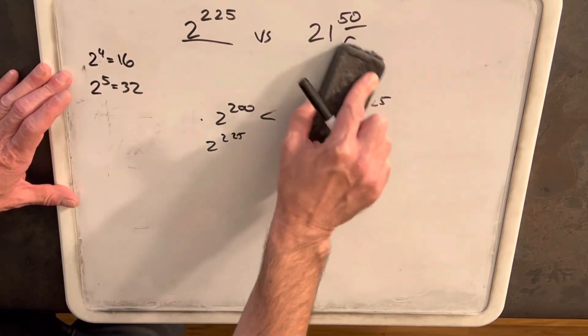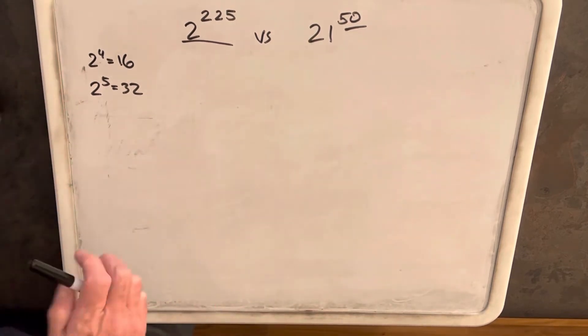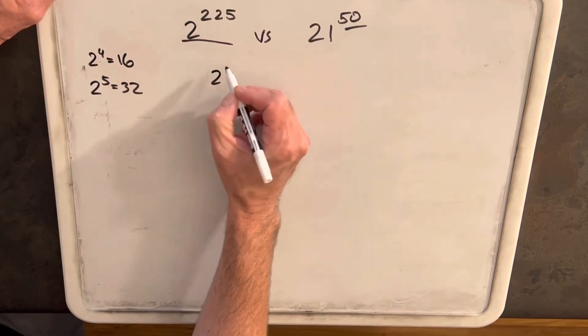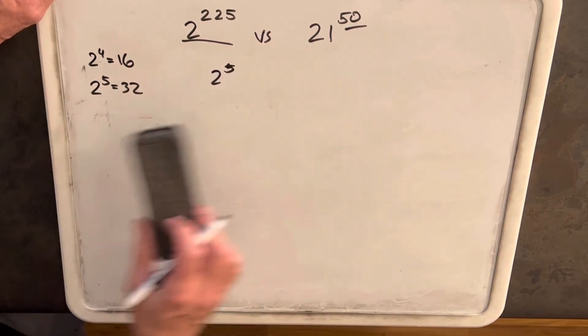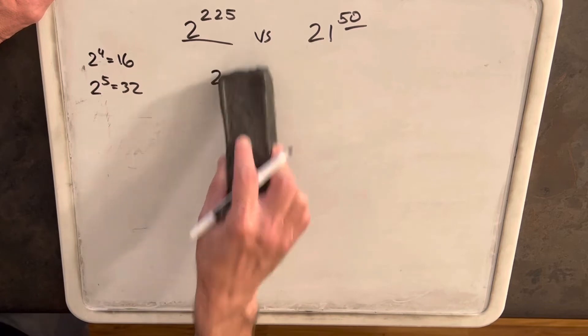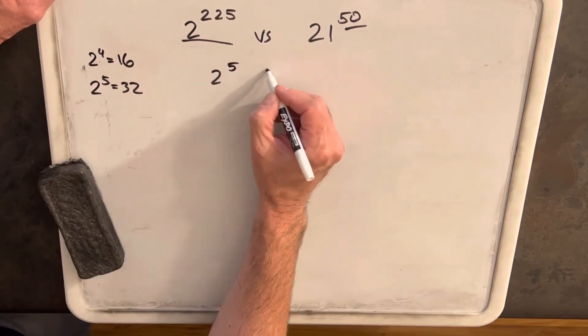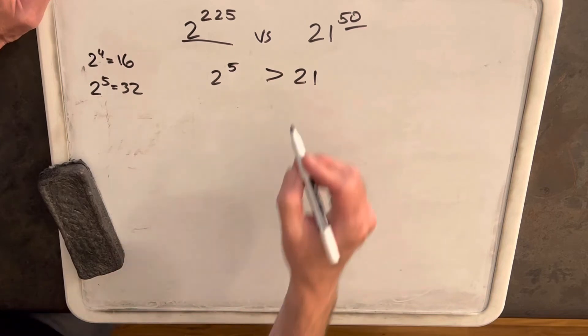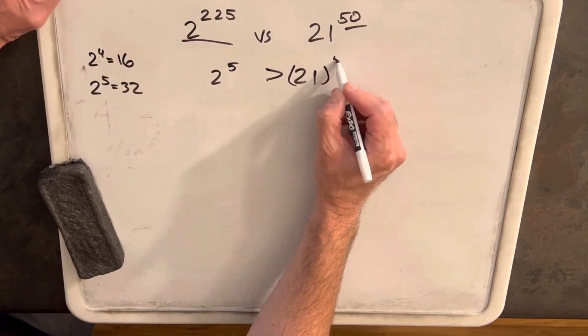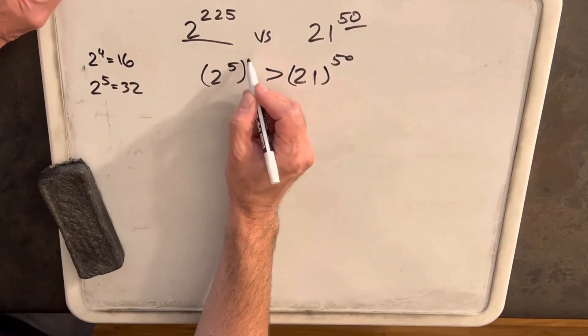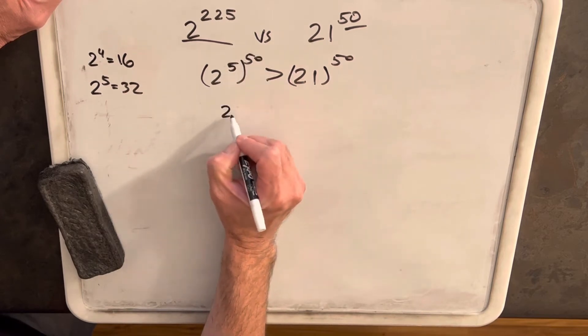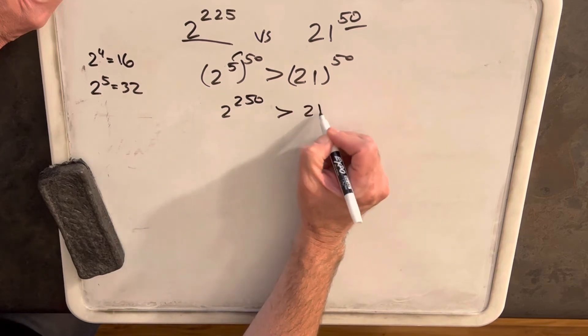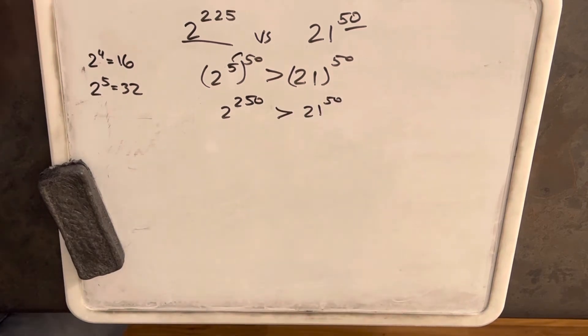But maybe we can find a way where the 2 to the 225th is greater. So we'll say we know that 2 to the 5th, which is 32, is actually greater than 21. Then again, let's raise it to the 50th power. And so we can say that if we multiply this in, we get 2 to the 250 is greater than 21 to the 50th.